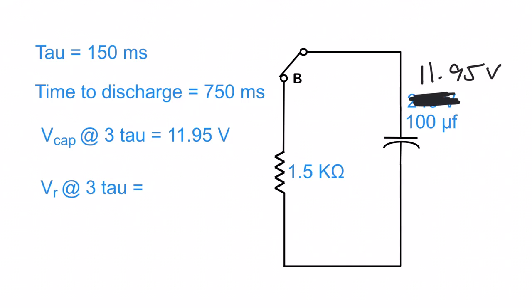So now the only thing left to figure out is what is our voltage at the resistor at the third tau. The voltage at the resistor is super easy because all we have to do is remember that this voltage here at the capacitor is a source. This is a resistor in the circuit. So whatever the voltage is here, the voltage has to be the same there. So if I have 11.95 volts on this guy, I have to have 11.95 volts on the resistor.